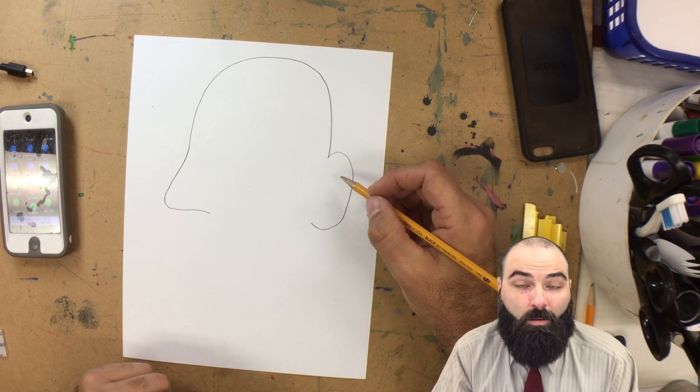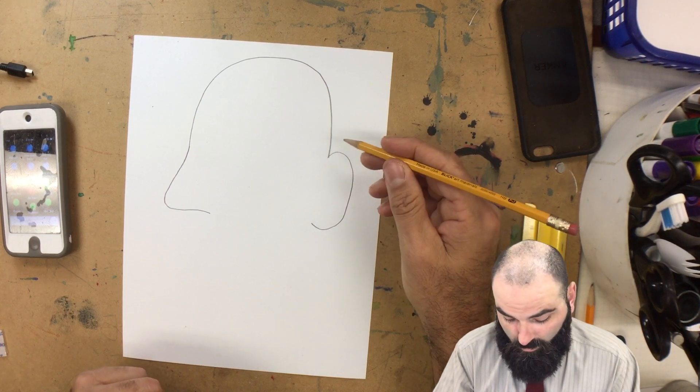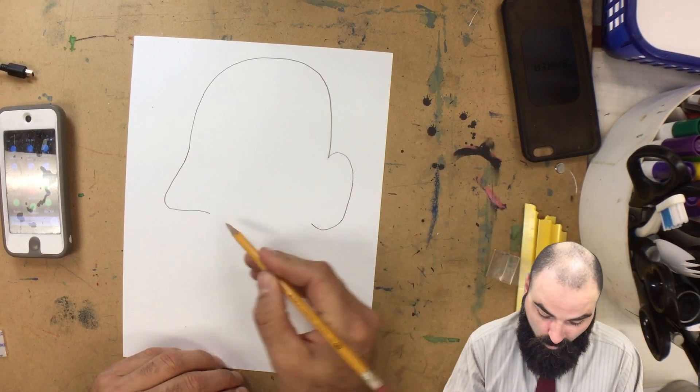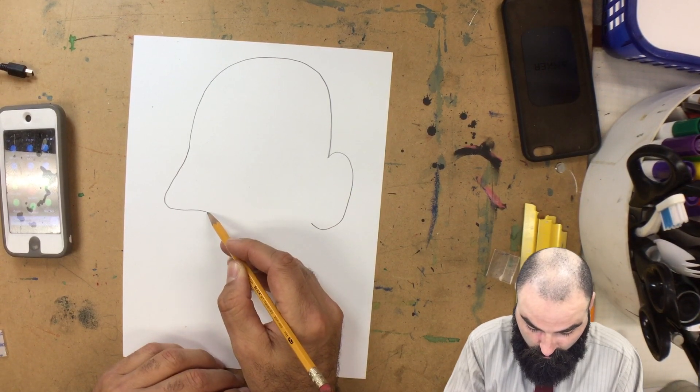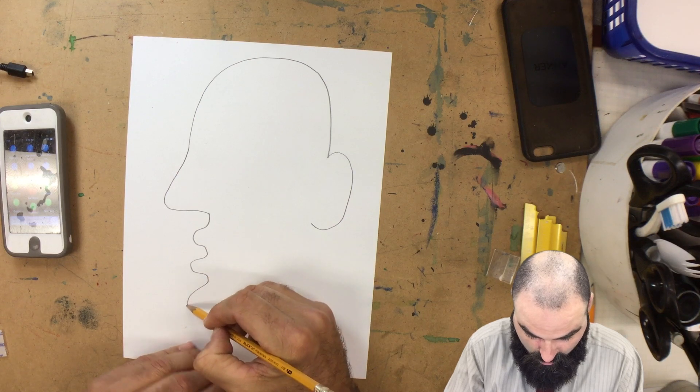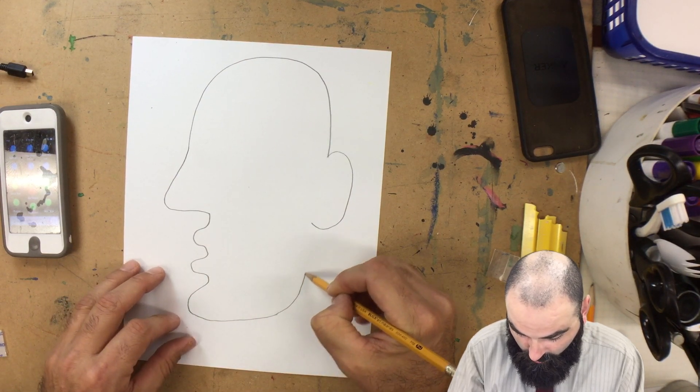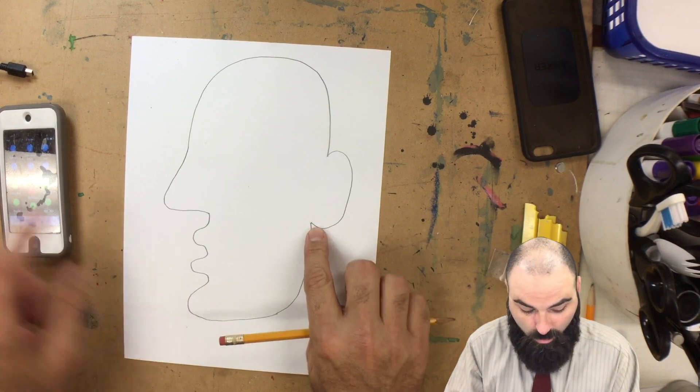Take your time, if you make a mistake, erase it and fix it. Next step, we're going to draw the mouth next. So we're going to come down and draw the lips and the chin. And then we're going to curve under and over to draw the jaw line and connect all the way to the bottom of the ear right there.